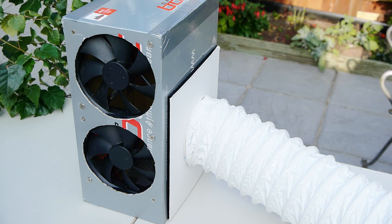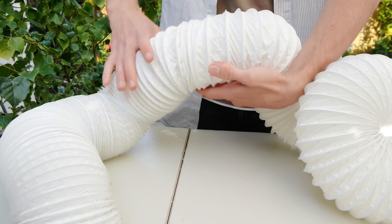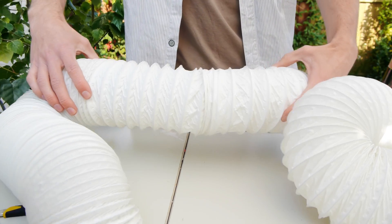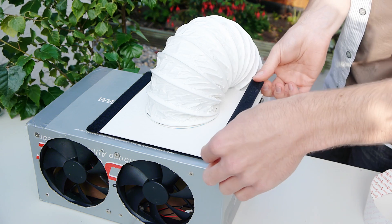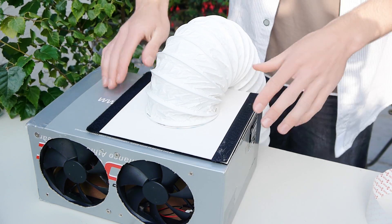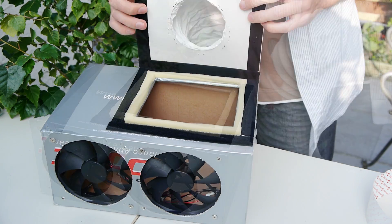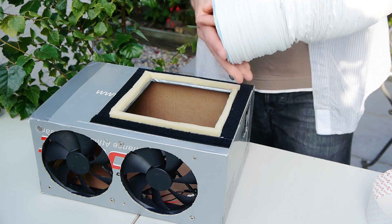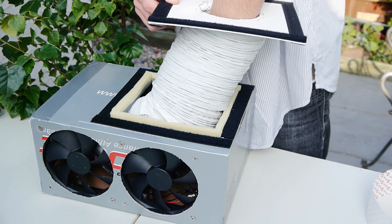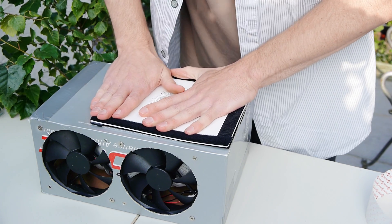The problem with using flexible ducting is that it's quite hard to store, so what we can do is add some more velcro to the other side of the removable cardboard cutout. Now when we want to pack it away, it's just a case of putting the ducting inside the box and pressing the panel down onto the velcro.